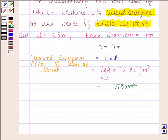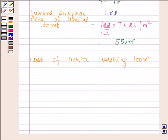In the question it is given that cost of whitewashing 100 square meters of conical tube is Rs. 210.